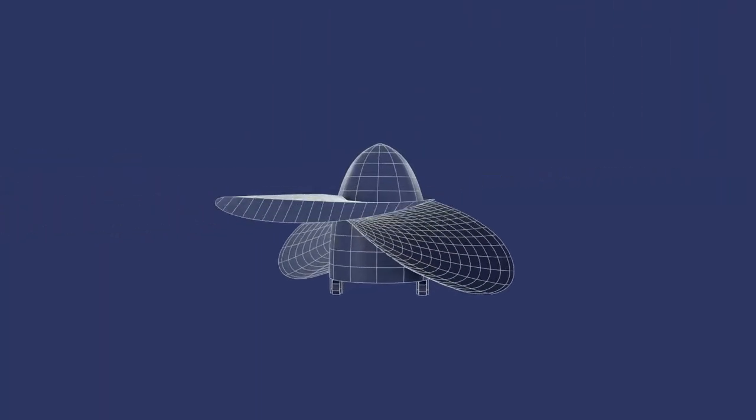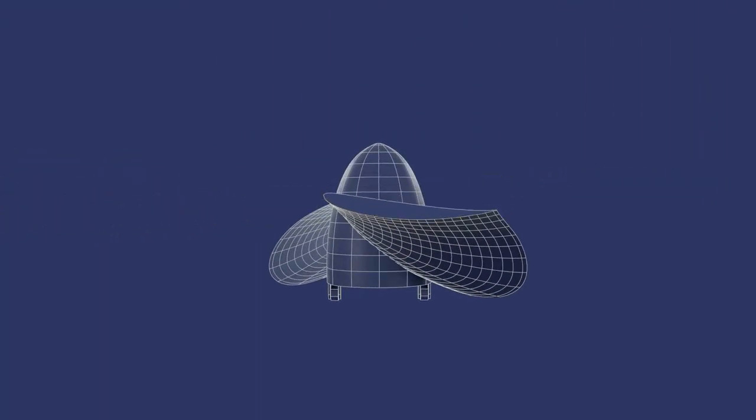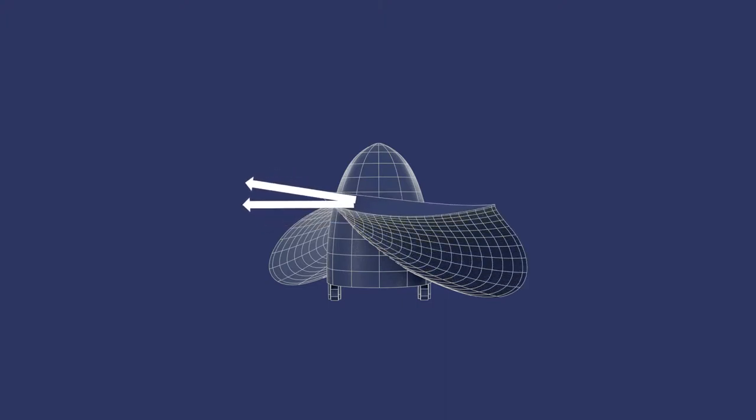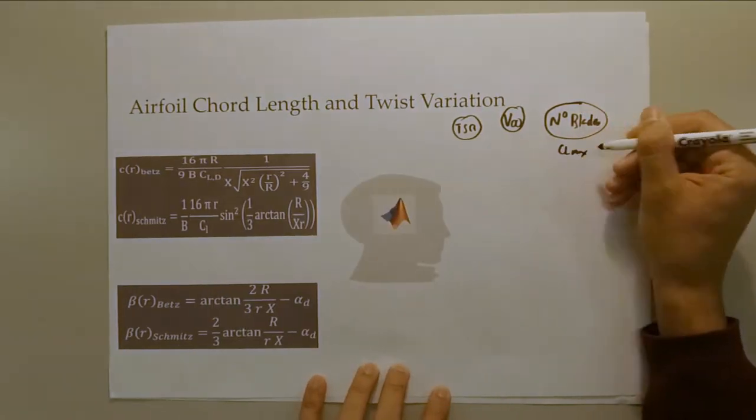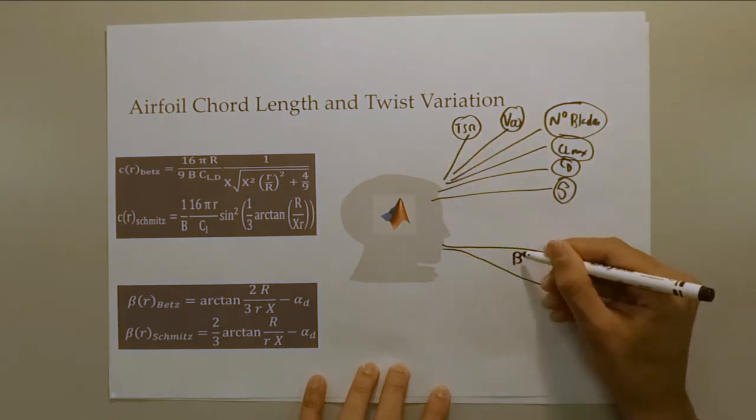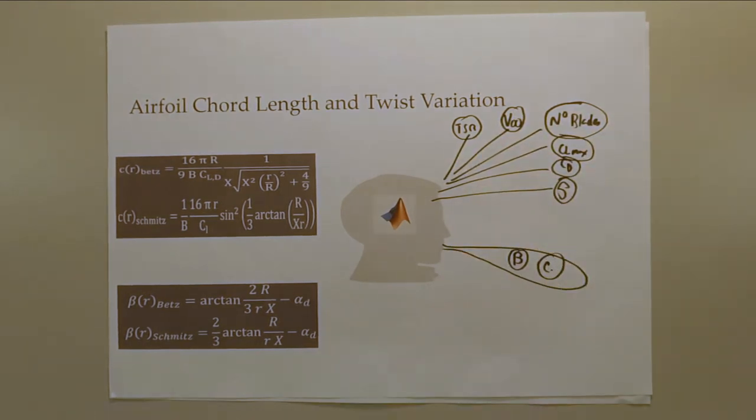To calculate the variation of twist and chord along the blade, the Betts and Schmitz formulas were implemented in a MATLAB code. The input variables were TSR, wind speed, number of blades, CLmax, CD, density, and blade radius to output the individual sectional twist and chord lengths. One of the limitations in the Betts model was the fact that the induced rotation and the weight due to the rotating blades was not considered.